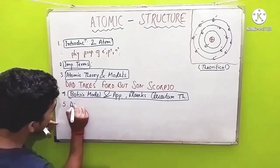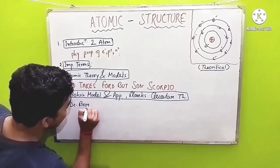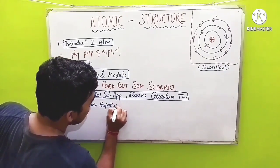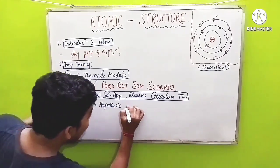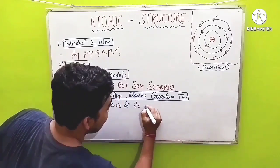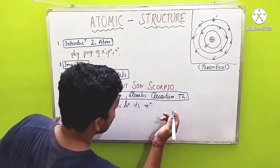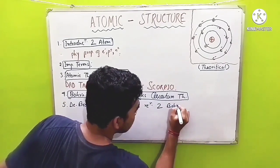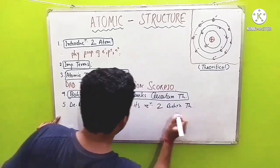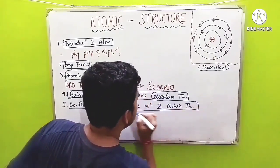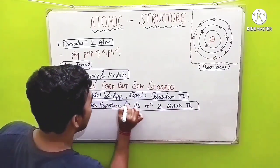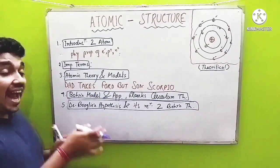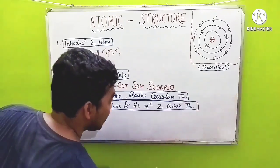Next comes number five — the de Broglie hypothesis and its relation to Bohr's theory. This you will learn in the fifth lecture, along with important numericals and other questions at the last part of that video.